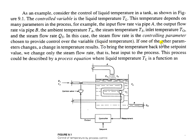If one of the other parameters changes, a change in temperature results. Meaning that if T0, the flow rates QA or QB, or the steam temperature changes, it will result in a change of TL, the liquid temperature.